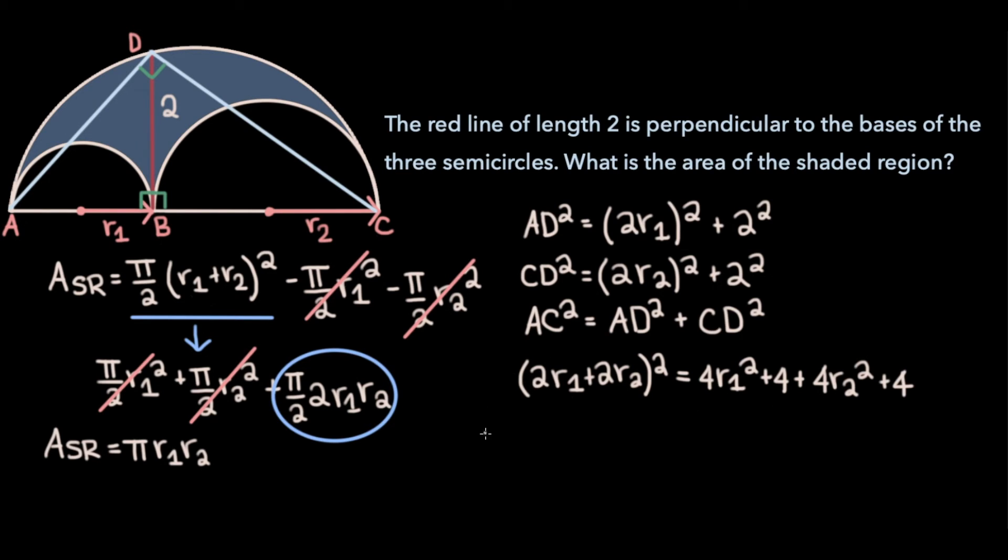Now if we expand the left hand side of our equation, we get 4r1² + 4r2² + 8r1r2. And the right hand side, we'll keep as is. Notice that this term and this term cancel now, as well as this term and this term. And so what we're left with is 8r1 times r2 equals 4 + 4, or 8. And dividing by 8 on both sides gives us r1 times r2 is equal to 1.